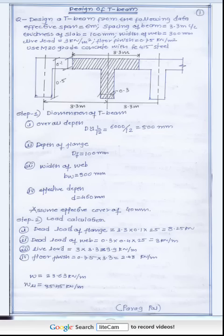Step number 2: Load calculation. First determine the dead load. Dead load of flange, then dead load of web. Dead load of flange means 3.3 length multiply by width multiply by 25. Similarly, dead load of web. Then live load and floor finish is given.